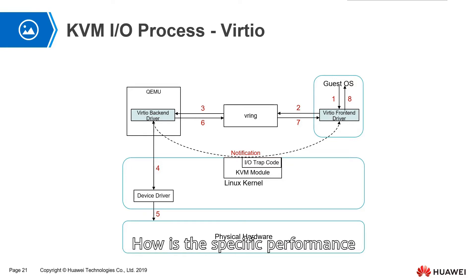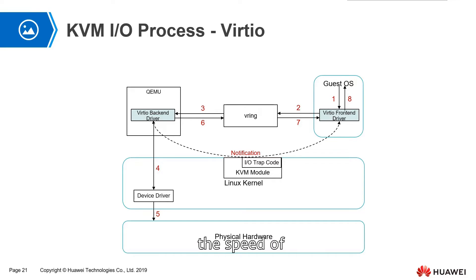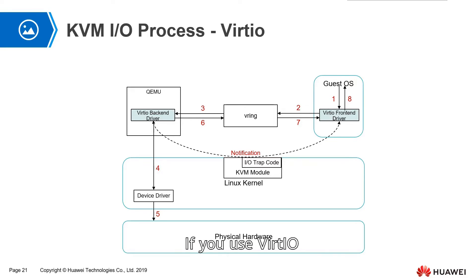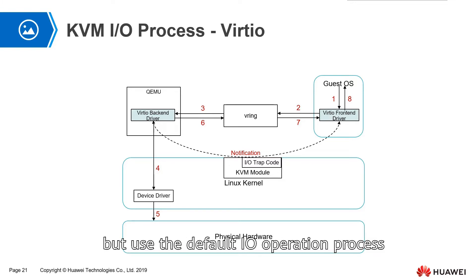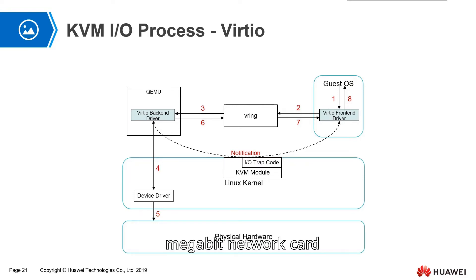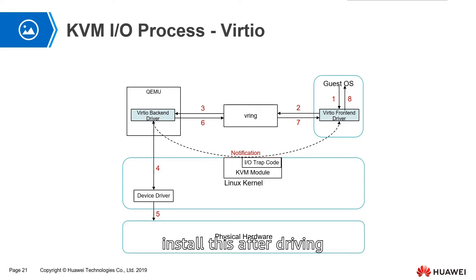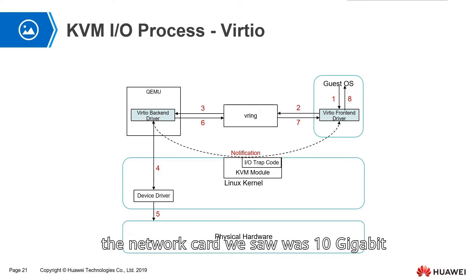How is the specific performance? Under the Windows operating system, you can see the speed of virtual machine network cards. If you use the default IO operation process without VirtIO, we see a 100 megabit network card. If you install VirtIO and use its driver, the network card we see is 10 gigabit — that is the performance improvement.